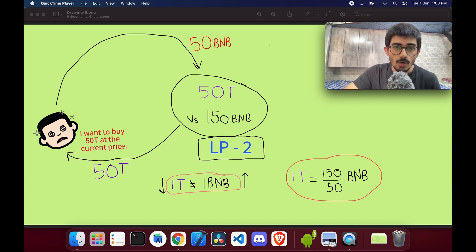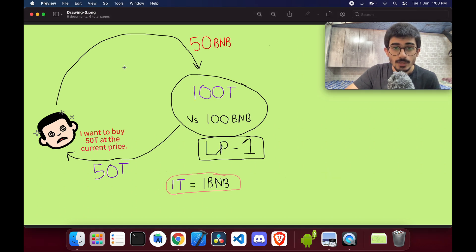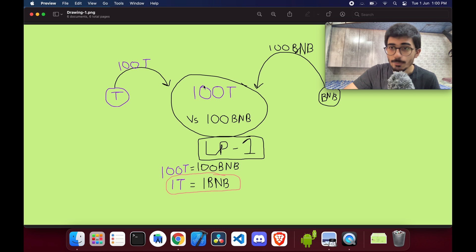The other thing that I wanted to touch upon was - say for example a person comes in, so let me just go back. Say for example this is the liquidity pool that we had set up, right? Now instead of buying 50 tokens, he comes up and says I want to buy 200 tokens. Now in the liquidity pool there aren't 200 tokens, so would that swap go through? No, he won't be able to invest more than 100 BNBs in this liquidity pool.